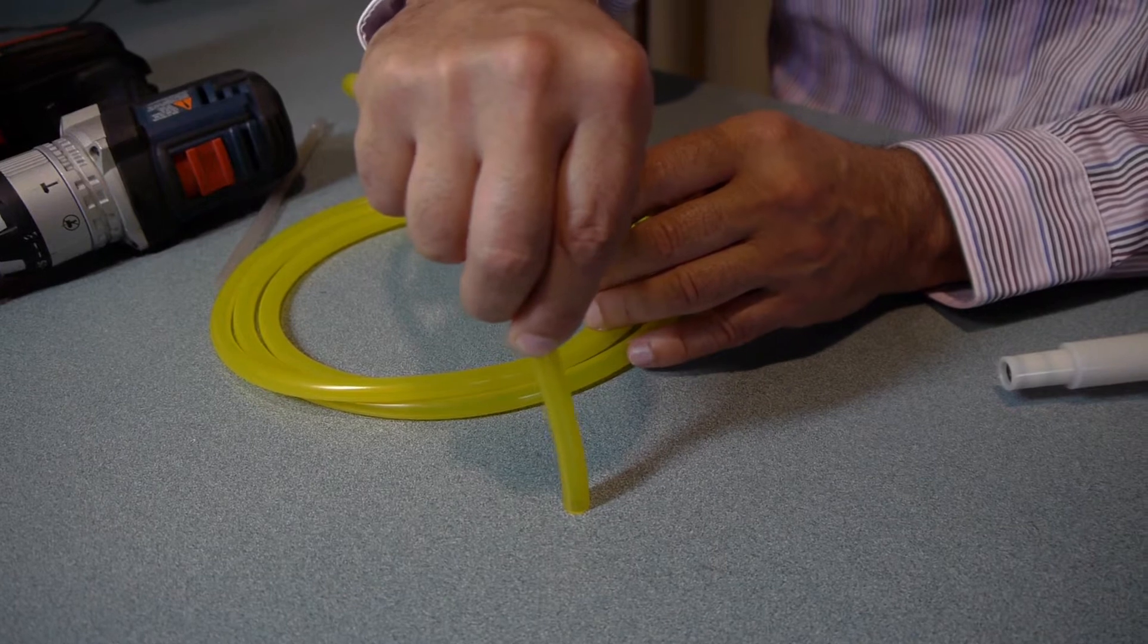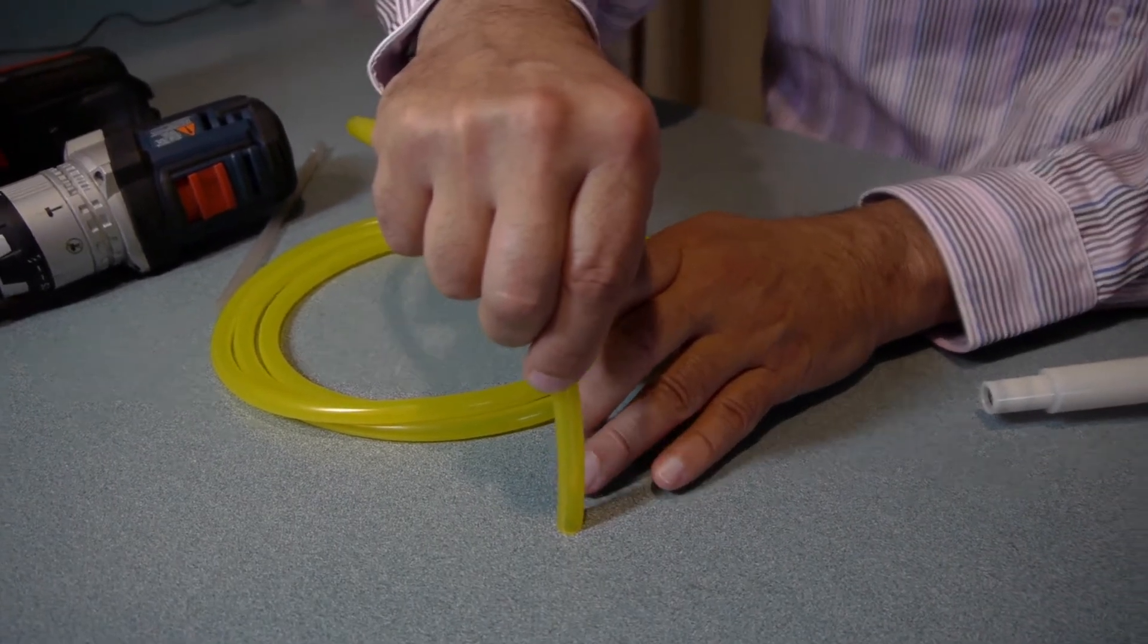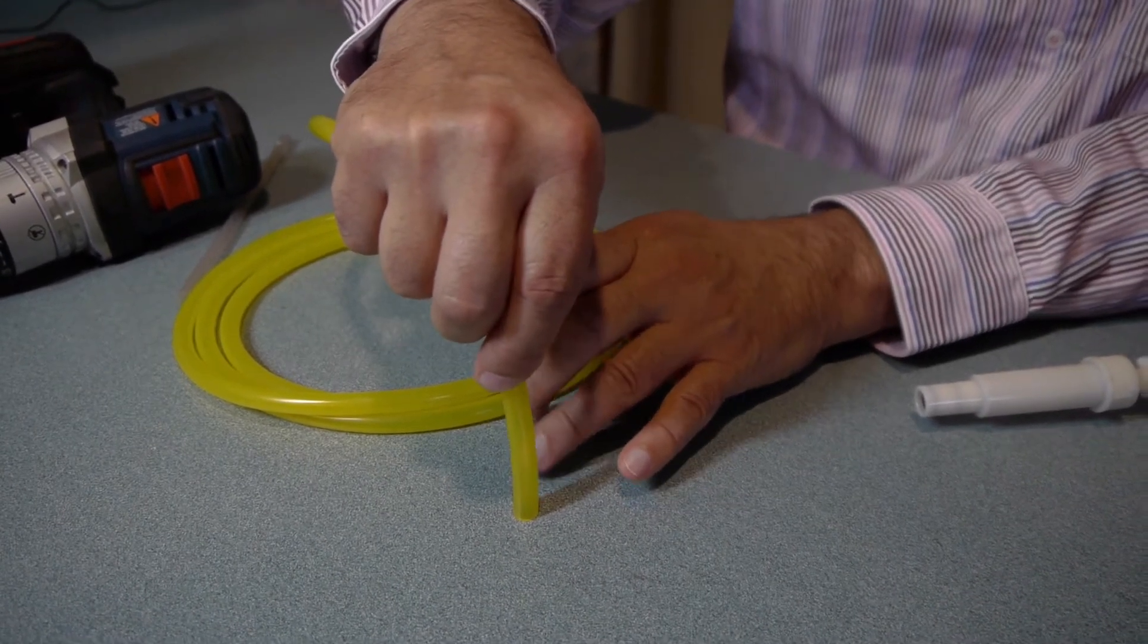Thereby, when you're trying to suck the soap out of the container, you'd actually be trying to suck the bottom of the container up through, and you wouldn't get any soap to come up through there.